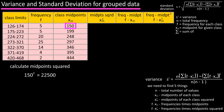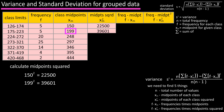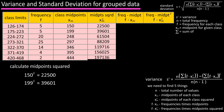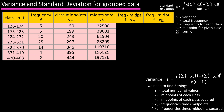Now fill in column 4 — the midpoint of each class squared. For class 1, the midpoint is 150, squared gives 22,500. For class 2, the midpoint is 199, squared gives 39,601. Continue this process and fill in column 4 as shown.